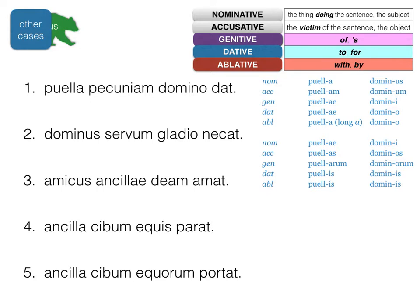Number three: 'the friend loves the goddess' — that's straightforward. But what is the '-ae' ending doing? It could be nominative plural, but we already have a nominative singular and the verb is singular, so it can't be that. We also see '-ae' in the genitive and dative singular, so it could be 'of a slave girl' or 'to/for a slave girl'. 'The friend loves the goddess for the slave girl' is a bit odd, so it's better as 'the friend of the slave girl loves the goddess' — choosing the best fit in context.